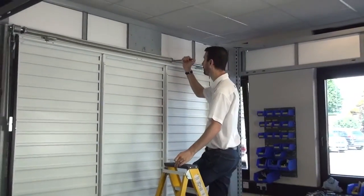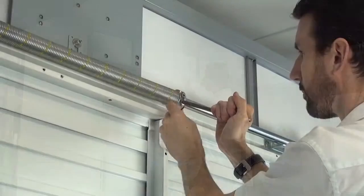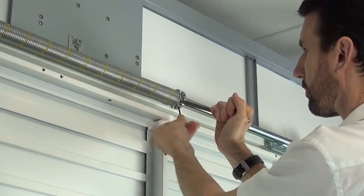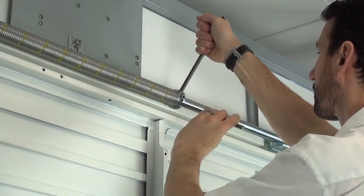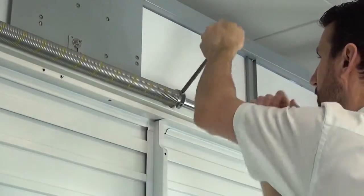Using the tensioning bars to hold the spring in place, use an Allen key to undo the grub screws. Then apply two more turns to the torsion spring using the tensioning bars.